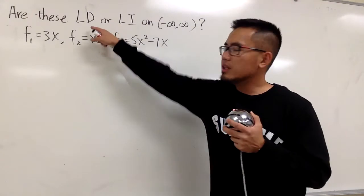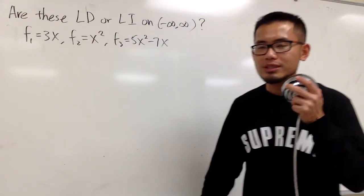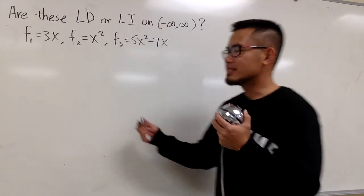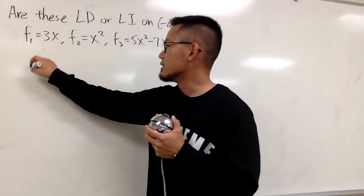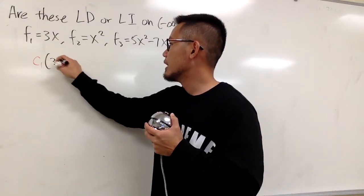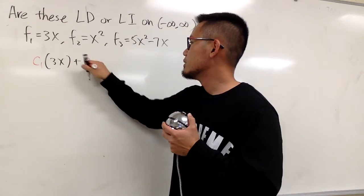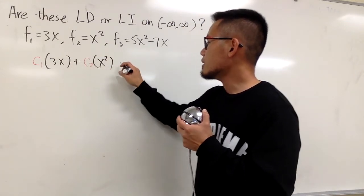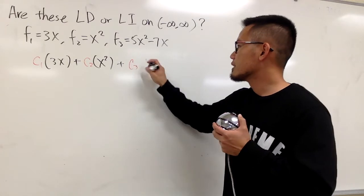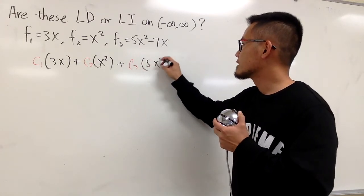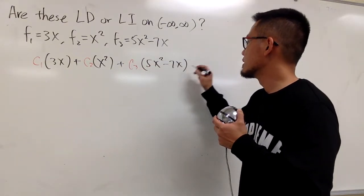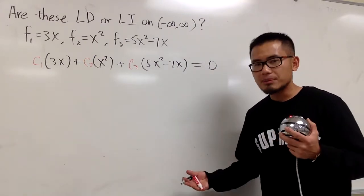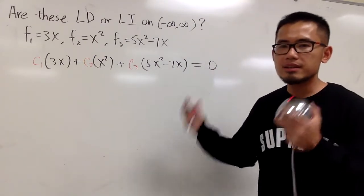To show LD, I'm going to use the definition with constants c1, c2, c3. We set up: c1 times 3x, plus c2 times x squared, plus c3 times (5x squared minus 7x), and make this equal to 0. We have to think about how we can make this equal to 0.